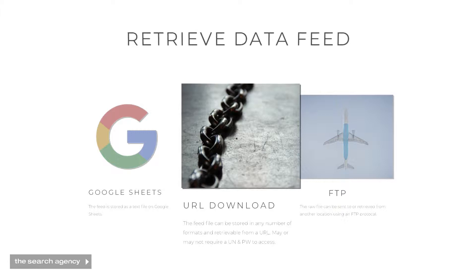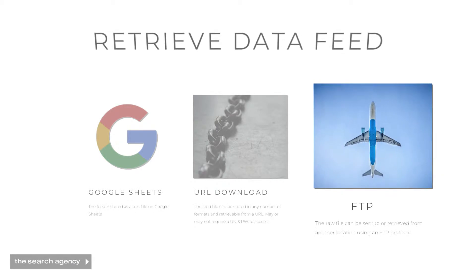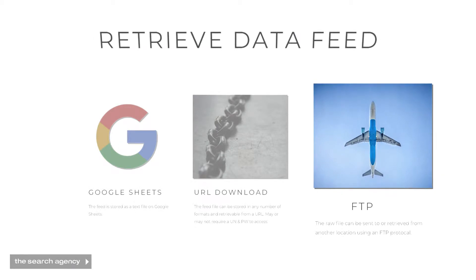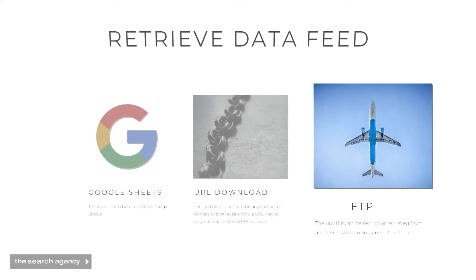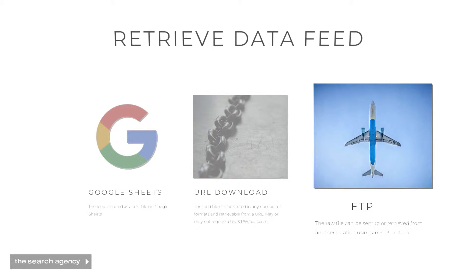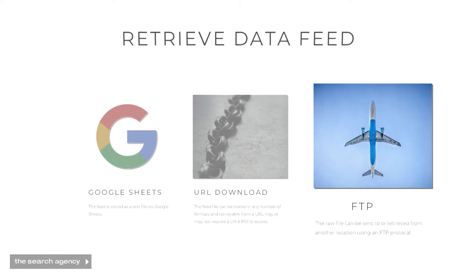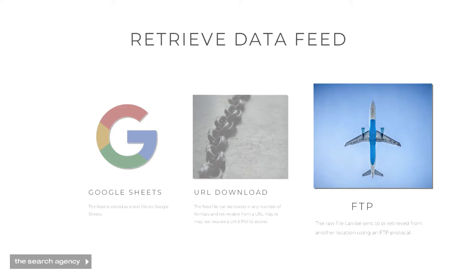Most e-commerce sites will have a URL that's usually username and password protected that stores all of their product data. If you're going to download the product feed from a URL, you have to make sure that you ask the client for a username and password combination, as these URLs are typically password protected. Probably the most common of all three methods is FTP, because some clients just don't want their data stored directly via URL.